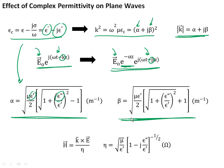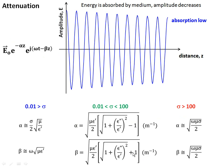To be complete: a propagating plane wave has both an electric field and a magnetic component. In the general case, the magnetic field is given by the cross product of k-hat — the propagation direction — crossed with the electric field, divided by the impedance, which now becomes complex. We can calculate the magnetic field; it's a bit more complicated, but calculators and computers handle imaginary numbers just fine.